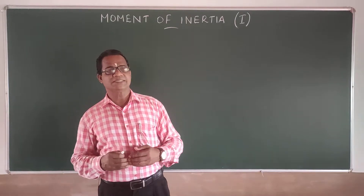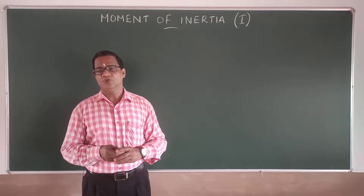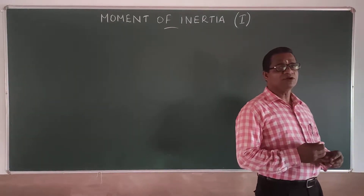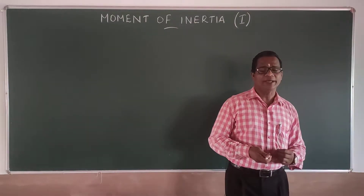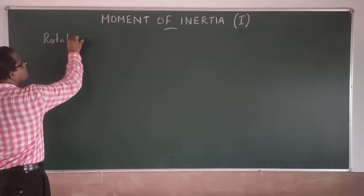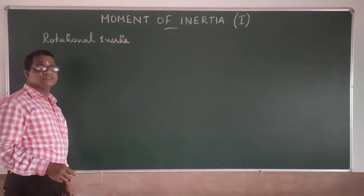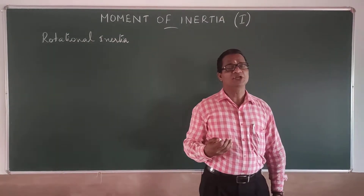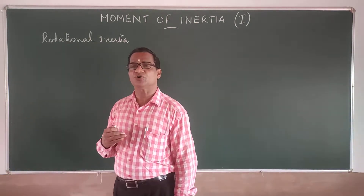A rotating body also has an inability to change its state of rotation by itself. That inability of a rotating body to change its state of rotation is known as rotational inertia. This rotational inertia is measured in terms of what we call moment of inertia — the measure of rotational inertia is called moment of inertia.